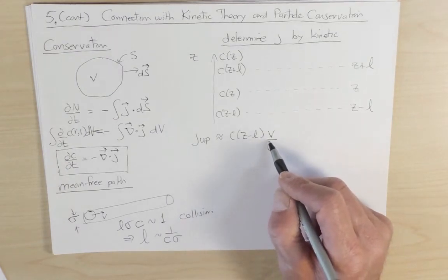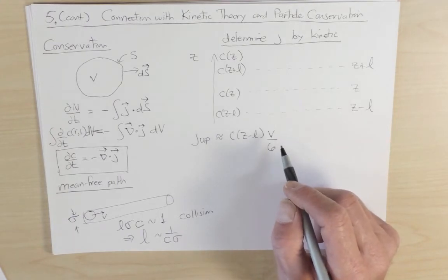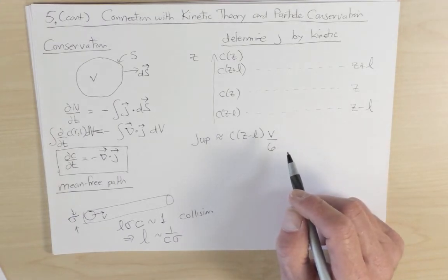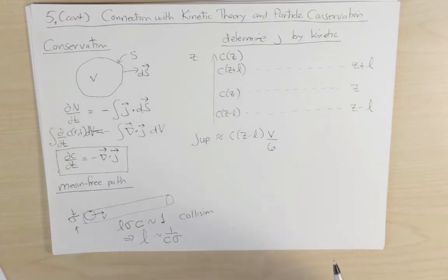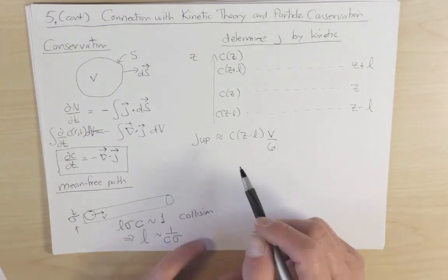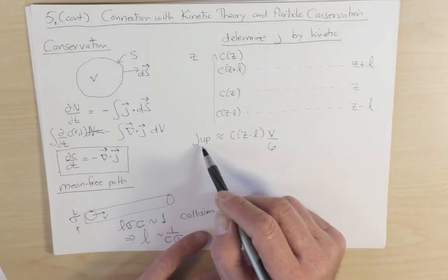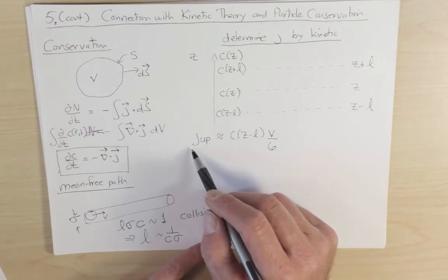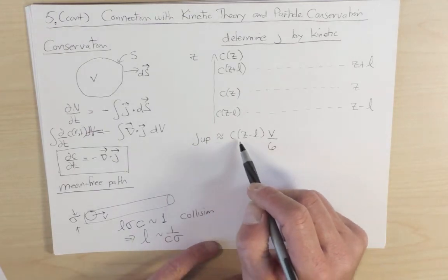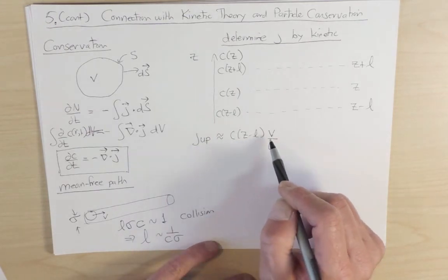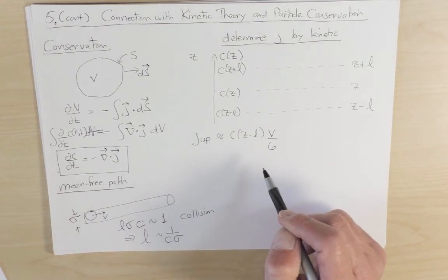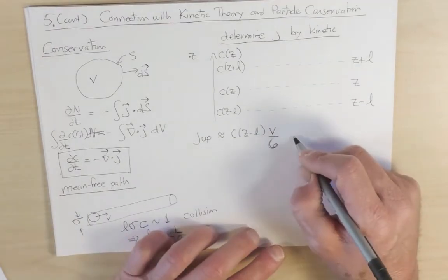one-sixth down, one-sixth to the left, one-sixth to the right, one-sixth out of the paper, one-sixth into the paper. So one-sixth of all the particles are moving up. And then the flux of particles, the number of particles passing per unit area per unit time, will be the concentration at z minus l times the velocity times this geometrical factor of one-sixth to account for the relative fraction of particles that are passing up.